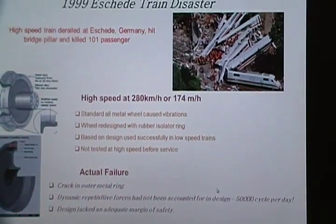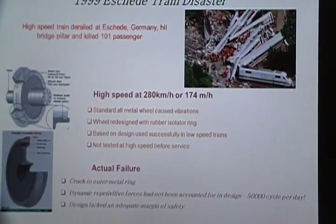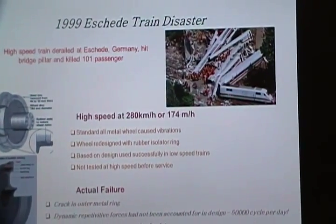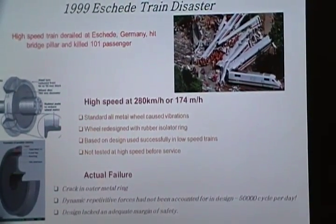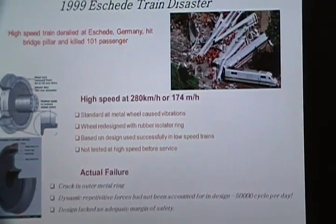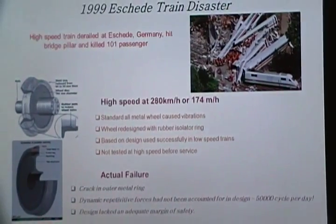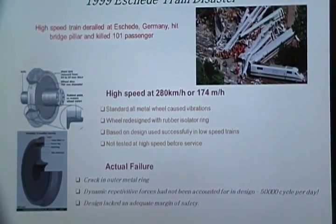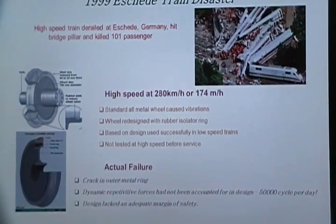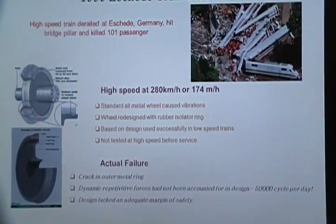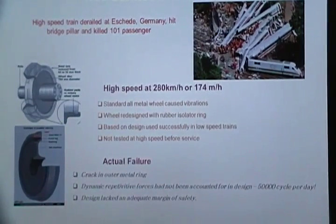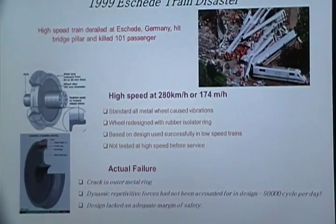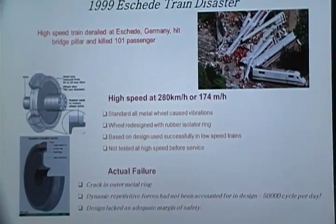In 1999, a high-speed train derailed in Germany and killed 101 passengers. All standard metal wheels cause vibrations. They used a rubber isolator ring on top of the old metal design, and based on the design it was successfully used in low-speed trains before, but it wasn't tested in high-speed trains. The crack started and then the train derailed. You can Google this incident — it was a pretty serious fatigue problem.